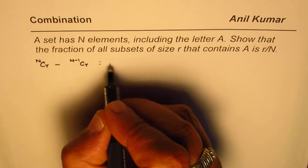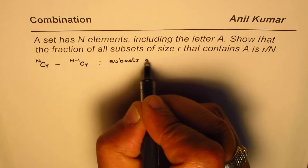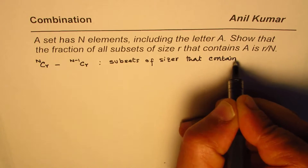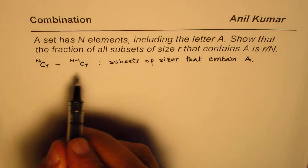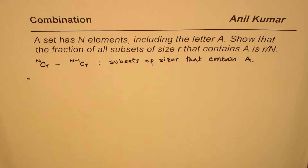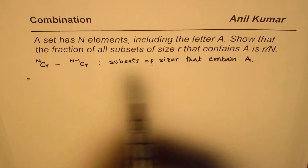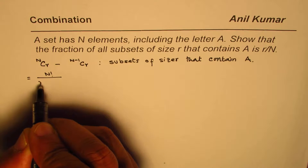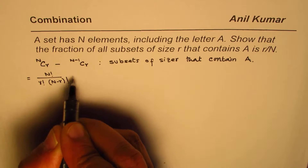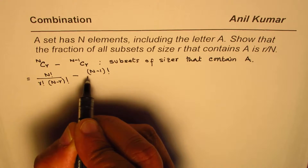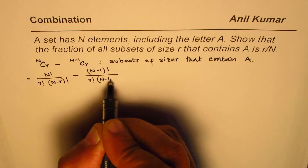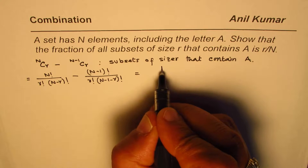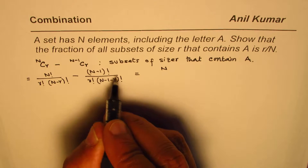So that is the subsets of size R that contain A. Now this is very critical to understand, and it is simple math to rearrange and get this part. Once we find this, we divide by NCR since we need to find the fraction of all subsets. So NCR is N factorial over R factorial times (N minus R) factorial, minus (N-1)CR factorial. Now to subtract we have to have a common denominator, so we can multiply by (N minus R) in both numerator and denominator.